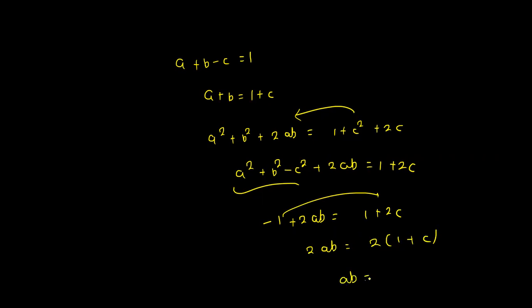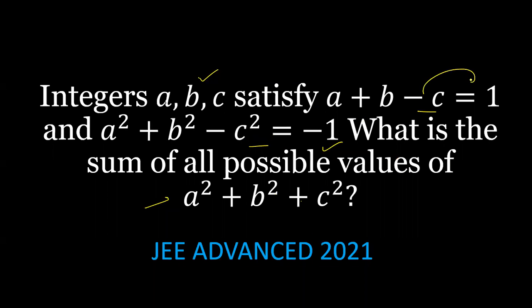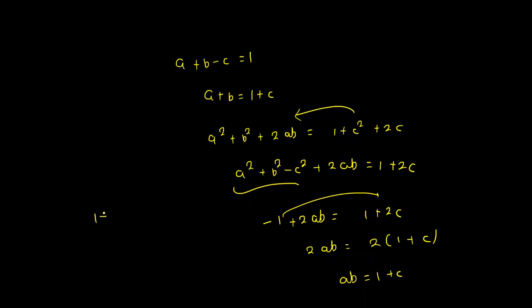Since ab equals 1 plus c and a plus b equals 1 plus c, we have ab equals a plus b. Rearranging, ab minus a minus b plus 1 equals 1, which can be factored as (a-1)(b-1) equals 1.